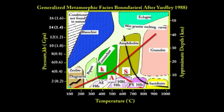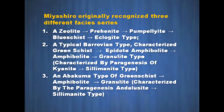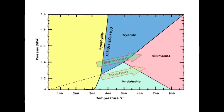Second is the typical Barrovian type, characterized by greenschist, epidote amphibolite, amphibolite, granulite type, characterized by paragenesis of kyanite-sillimanite type. And third, an Abukuma type of greenschist, amphibolite, granulite, characterized by the paragenesis of andalusite-sillimanite type.